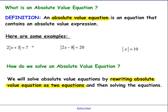Now that we remember what an absolute value of a number is, we want to talk about what an absolute value equation is. An absolute value equation is an equation that contains an absolute value expression. An equation has an equal sign, and an absolute value equation has both an equal sign and an absolute value expression. Here are some examples. In order to solve an absolute value equation, we are going to rewrite it as two separate equations and then solve each one.